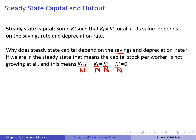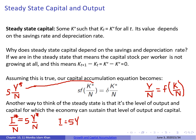Why does steady state capital depend on savings and depreciation? At the steady state, the capital stock per worker is not growing at all, so the left side of the capital accumulation equation — K_{T+1}/N minus K_T/N — equals zero, since both equal K*. Therefore, at the steady state, the capital accumulation equation becomes: S·f(K*/N) = delta·(K*/N), showing how steady state capital depends on savings and depreciation.